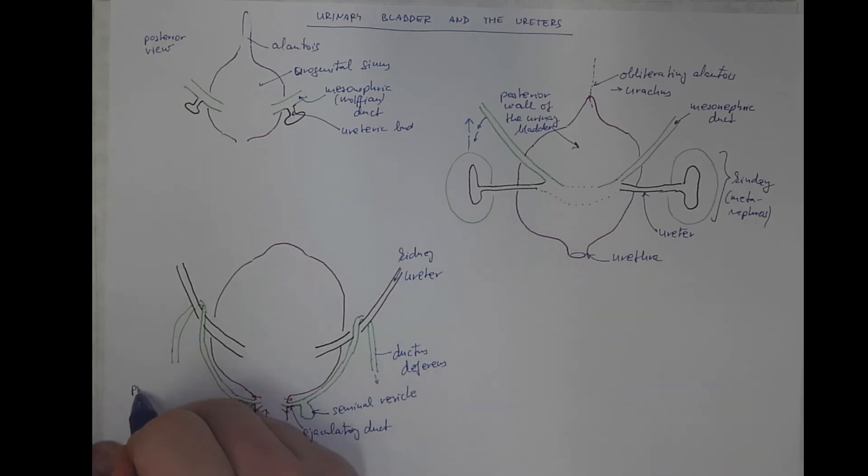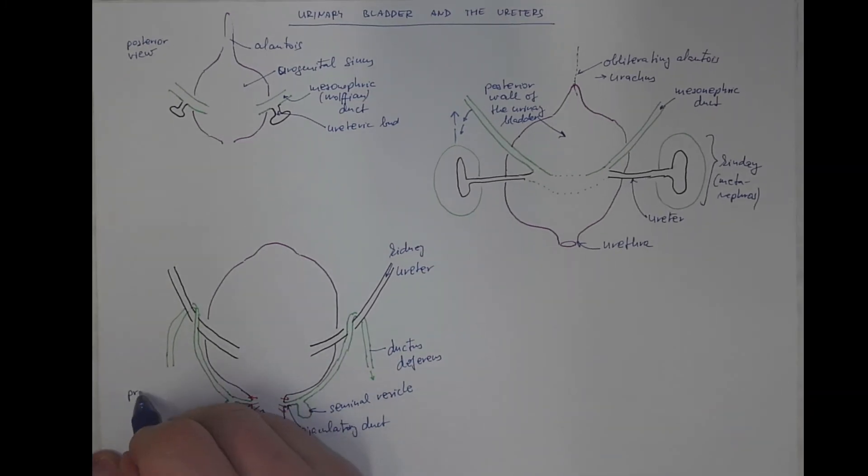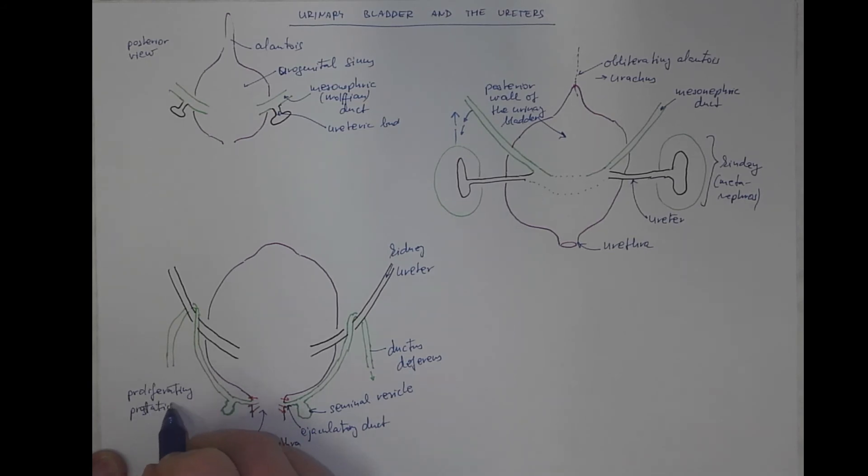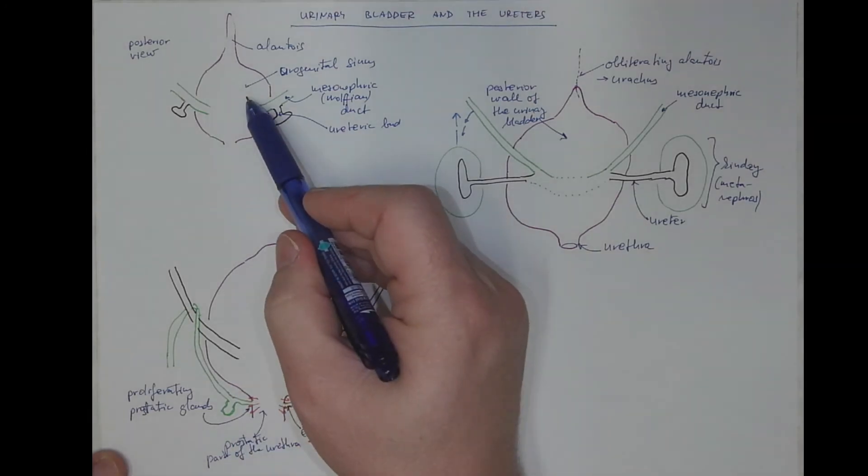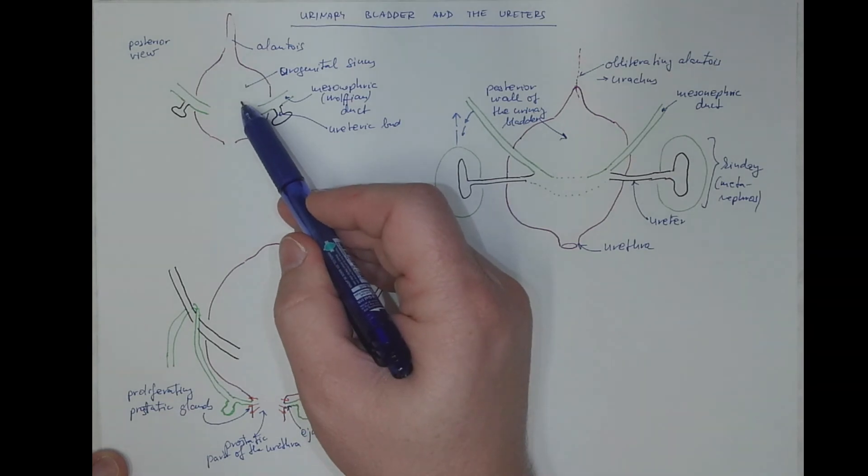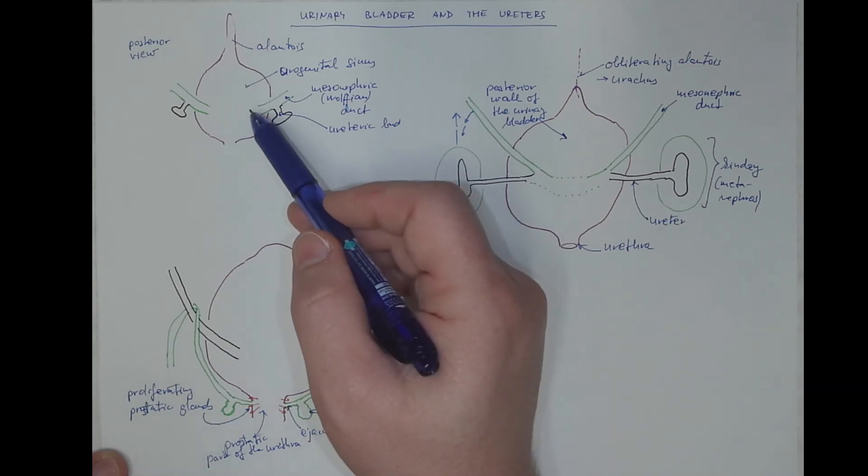So here are the proliferating prostatic glands. So the glands itself, the prostatic glands itself are of endodermal origin because it's still the material from the urogenital sinus which was the frontal part or the anterior part of the former cloaca.